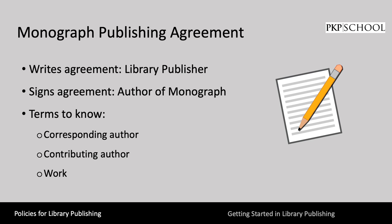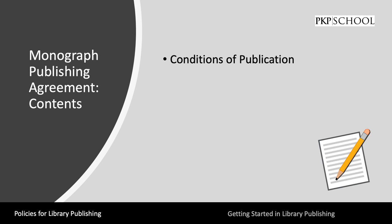Now let's move on to the contents of this agreement. Conditions of publication includes any requirements that the work be made open access or be licensed under Creative Commons. For example, a list of choices for licenses can be provided. The library publishing unit should be ready to assist the author in their decision. Copyright of the work includes a license where the authors can assign necessary rights to the publisher. For most library publishers, this is a non-exclusive license instead of a full copyright transfer. For more details, see Unit 1 of this module.